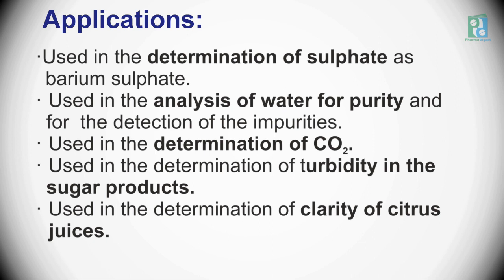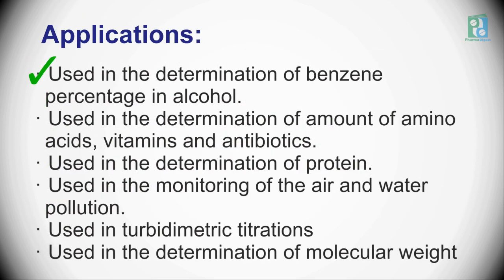Now let's learn about the applications of nephelometry and turbidometry. It is used in determination of sulfate as barium sulfate. It is used in the analysis of water for purity and for the detection of impurities. It is used in the determination of carbon dioxide. It is also used in determination of turbidity in sugar products. It is used in the determination of clarity of citrus juices. It is used in the determination of benzene percentage in alcohol. It is used in the determination of amino acids, vitamins, and antibiotics.